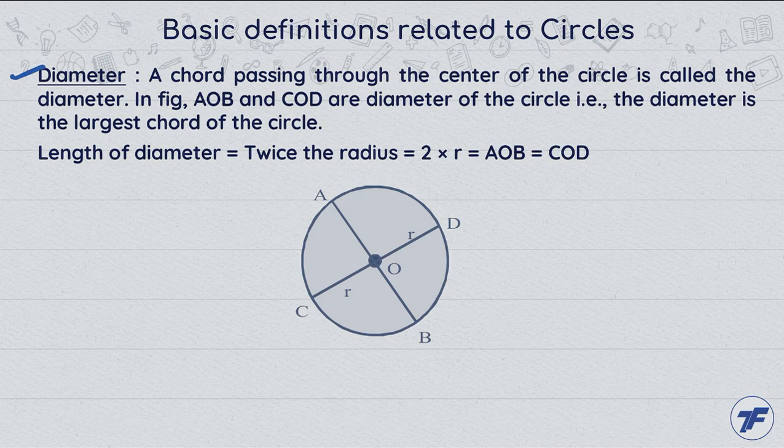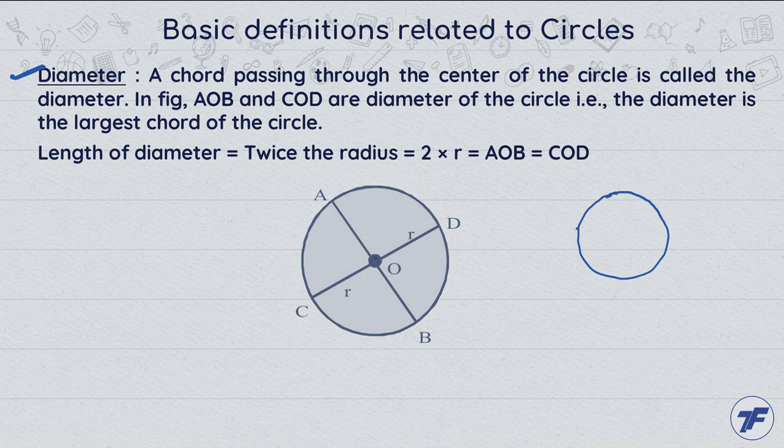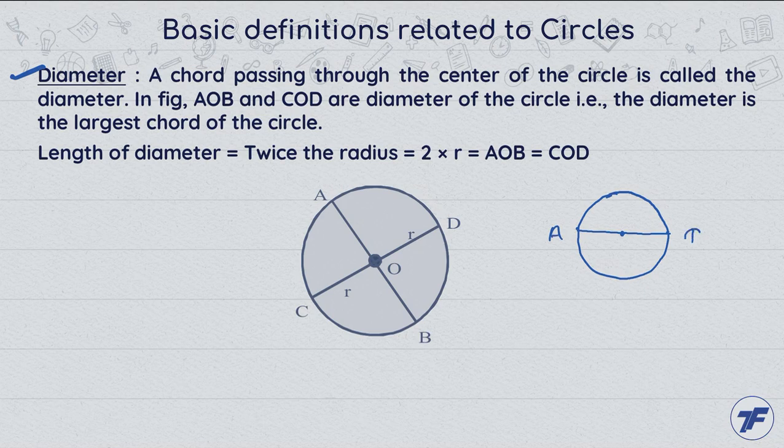Diameter: what is the diameter of the circle? A chord passing through the center of the circle is called the diameter of the circle. We already know what is a chord - any line segment joining two points of the circle is called a chord. And this chord is passing through the fixed point, fixed point means center. Any chord passing through the center is called diameter of the circle. यानि हम उसी chord को